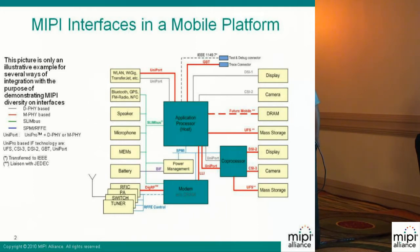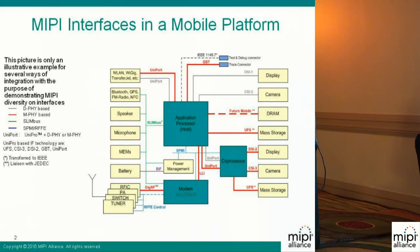What is not really seen in the picture, but actually is there, is that each of these devices may contain a UniPro switch, because UniPro is able to support a network architecture. In that way, any device connected to the UniPro network is able to communicate with any other device. For example, a coprocessor going through a UniPro switch integrated into the application processor could go to the GPT — a gigabit trace — enabling test debugging over a single connector of multiple SOCs.